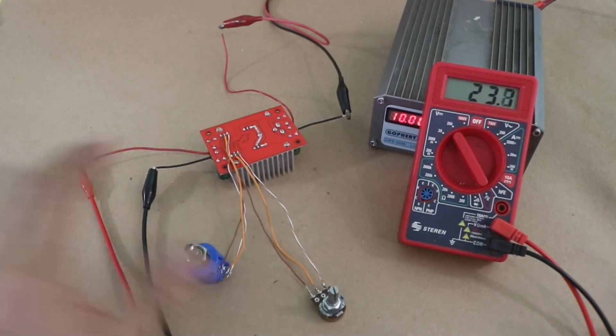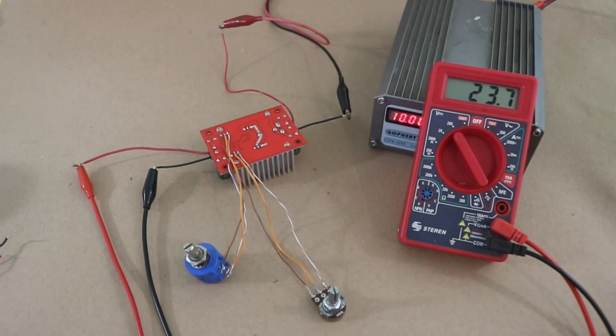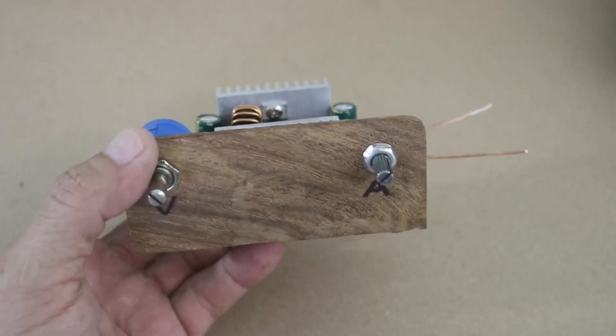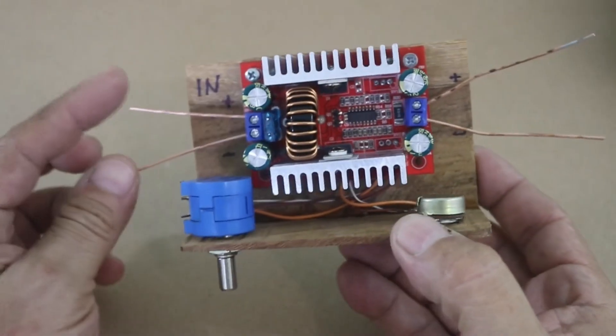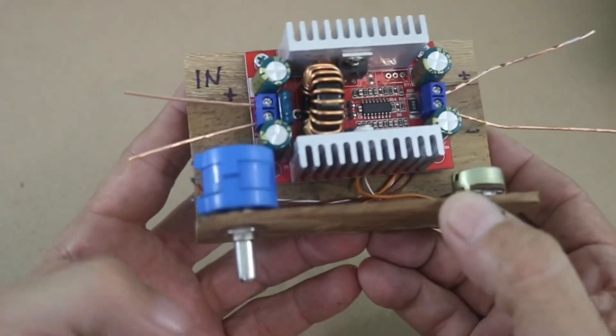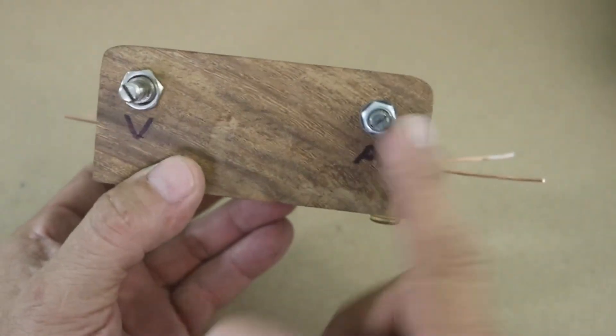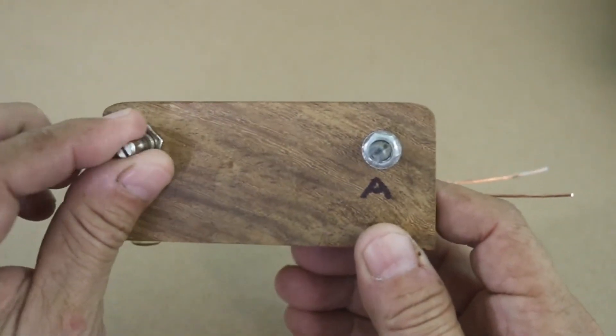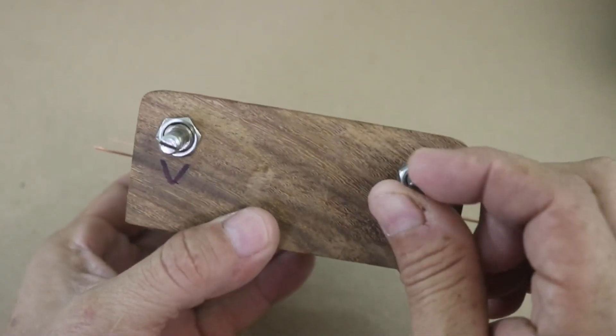Now we need to make an enclosure for our module with the potentiometers. Here it is, input and output voltage. And, we have the two potentiometers, voltage and current adjustments.